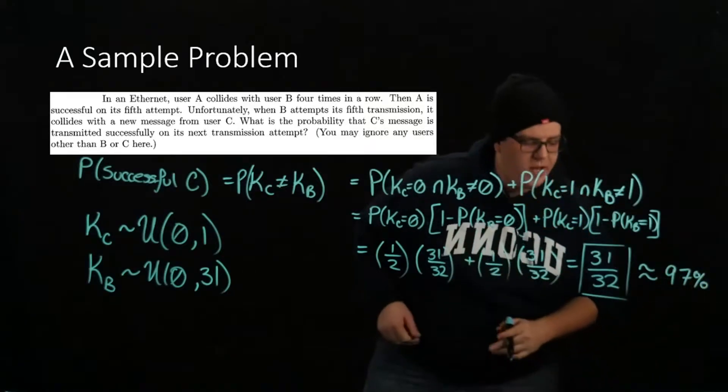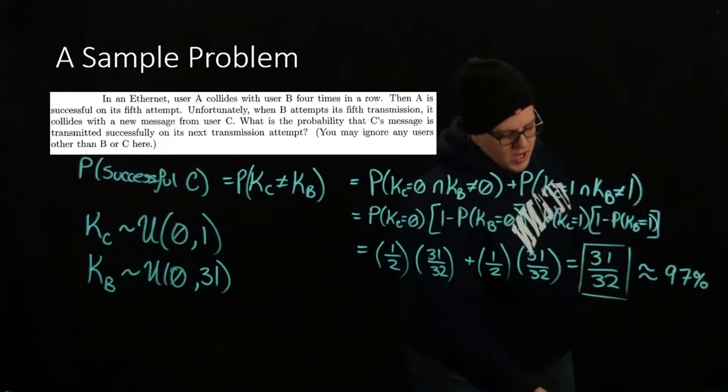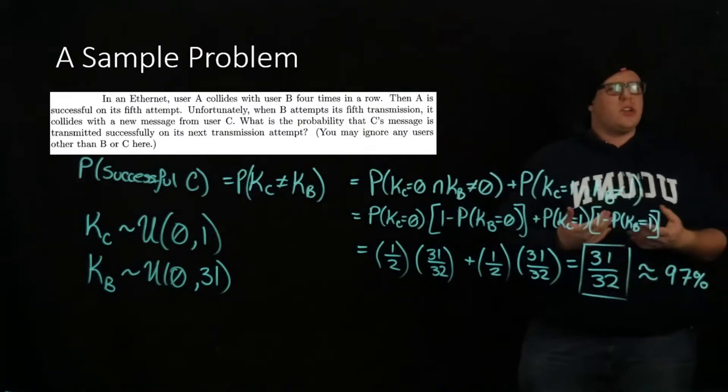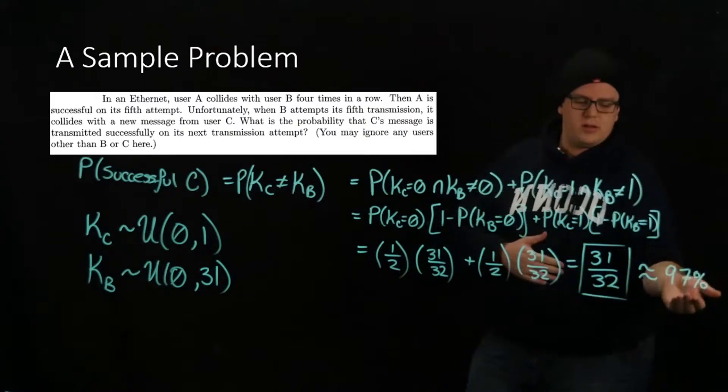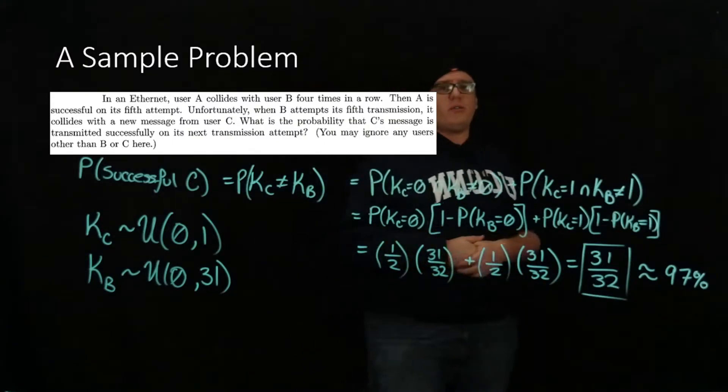More than likely, user C is going to be able to transmit. And assuming that nobody else will try to transmit again, user B will have a similar success rate. So that's an example of a problem that we can do.